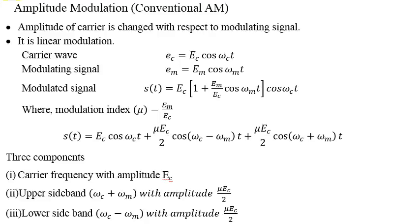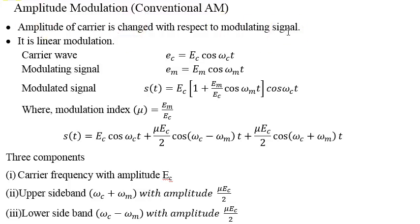Now we start with the conventional amplitude modulation system, which we call conventional AM — sometimes also called double sideband full carrier system. Here the amplitude of the carrier changes with respect to the modulating signal. It is said to be a linear modulation because the processes involved are linear and superposition applies.